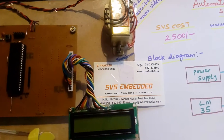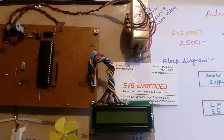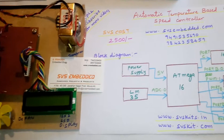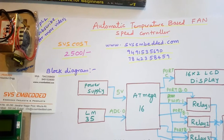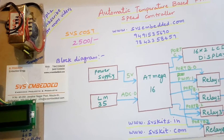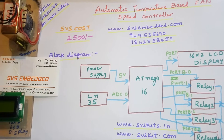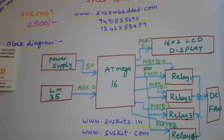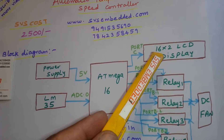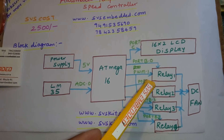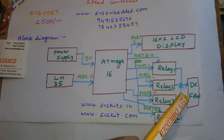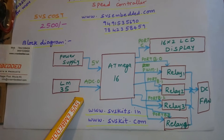Hi, we are from SVS Embedded. The project title is Automatic Temperature Based Fan Speed Control. I am using an ATmega16, a 16x2 LCD display, four relay coils, and one DC fan.